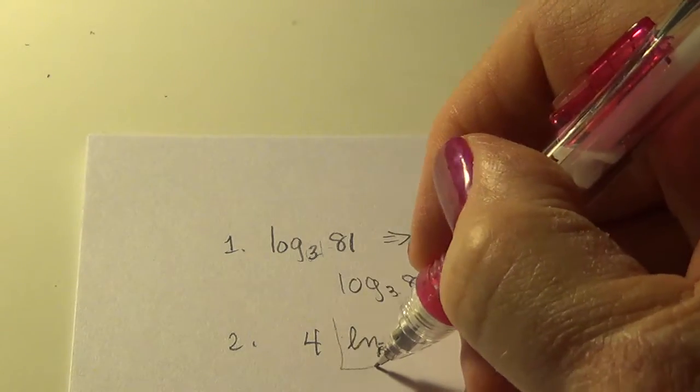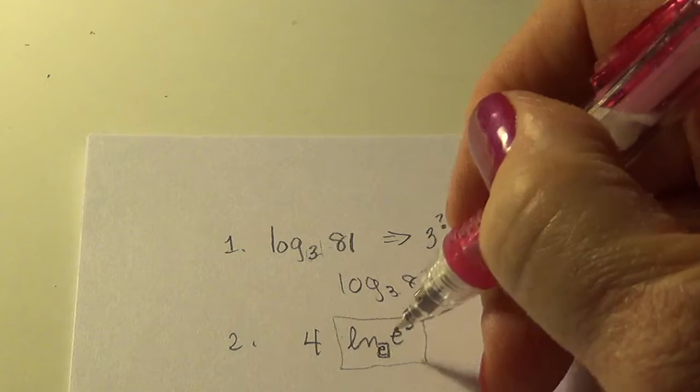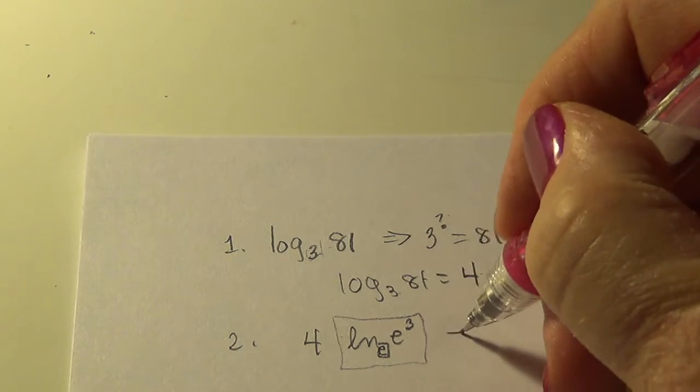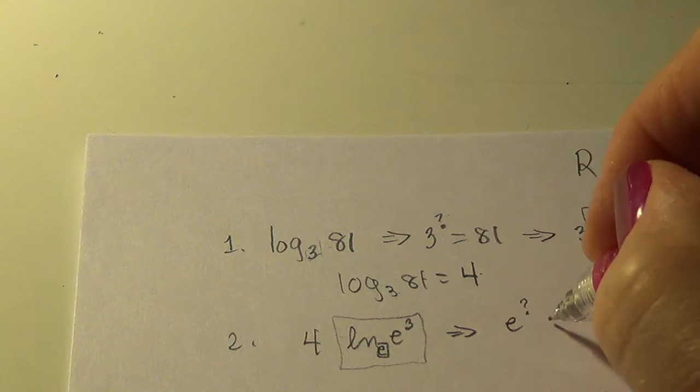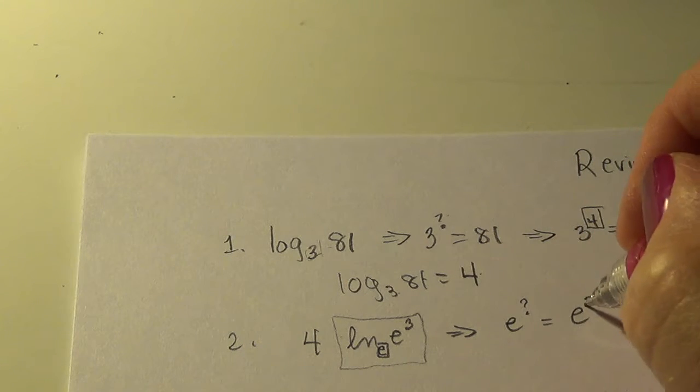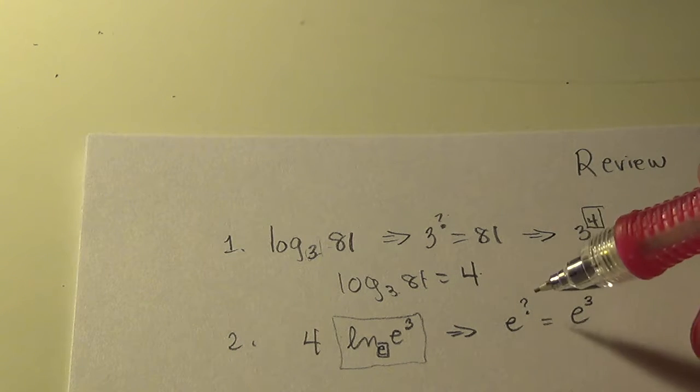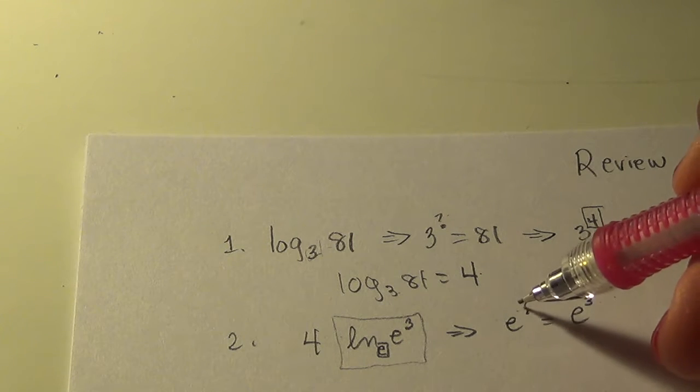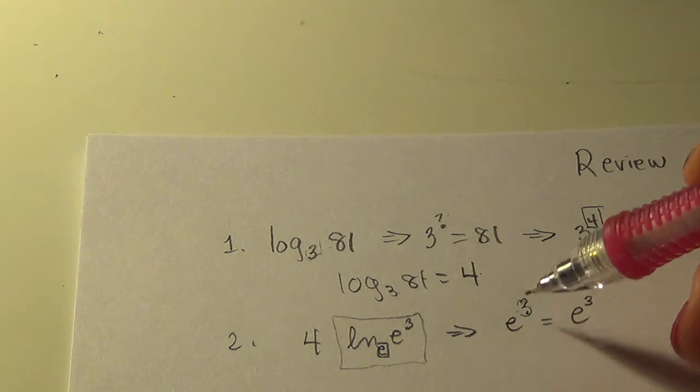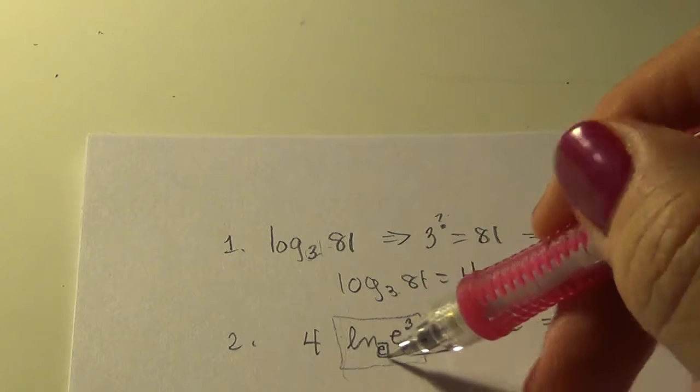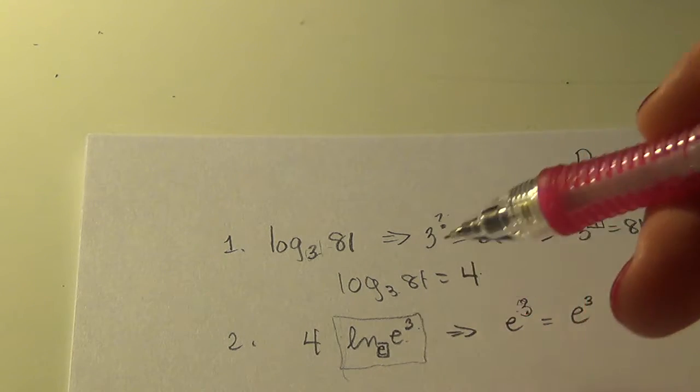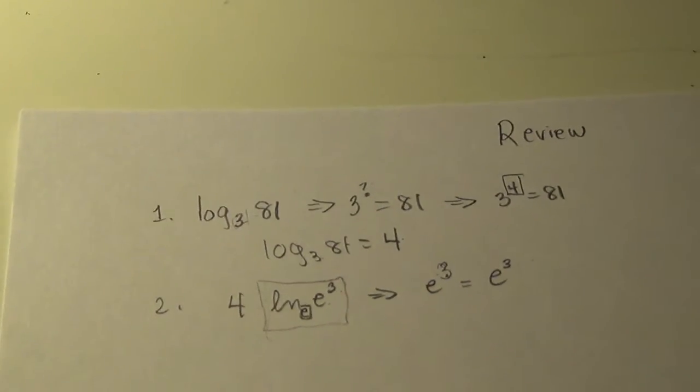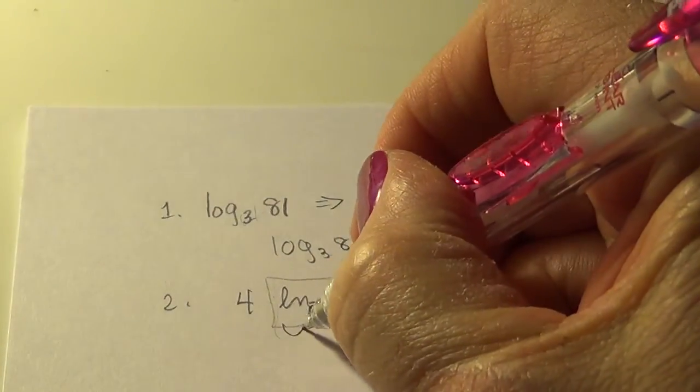So looking at this part only, it says what exponent do I give E to get E to the third? So E raised to what equals E to the third? Well, the answer is staring us in the face. So this must be a three. So this whole boxed area is simply a three. So all of this is a three.